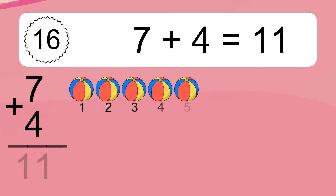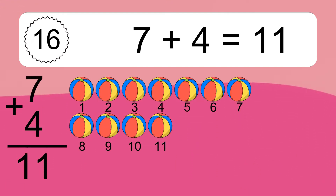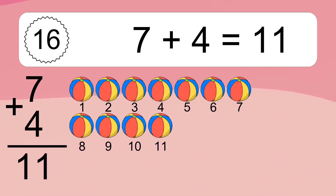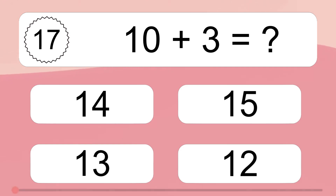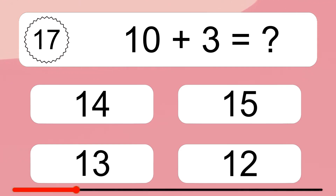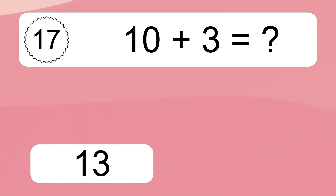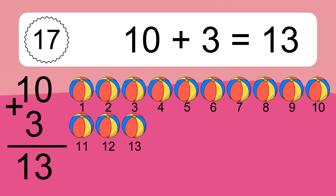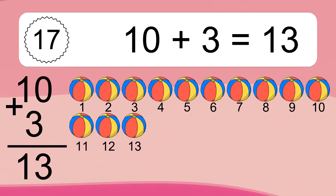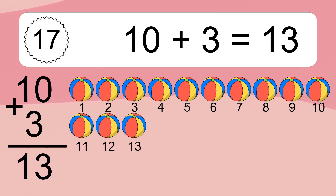7 plus 4 equals 11. Let's count it: 1, 2, 3, 4, 5, 6, 7, 8, 9, 10, 11. 10 plus 3 equals what? 10 plus 3 equals 13. Let's count it: 1, 2, 3, 4, 5, 6, 7, 8, 9, 10, 11, 12, 13.